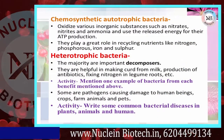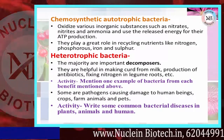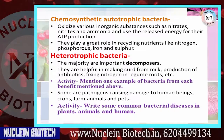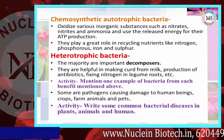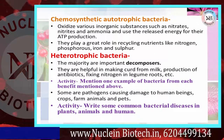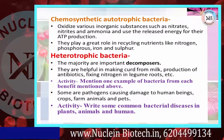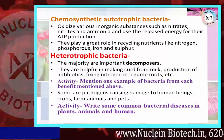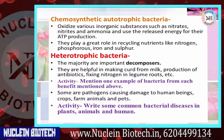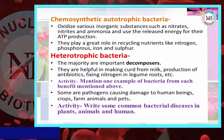Chemosynthetic autotrophic bacteria oxidize various inorganic substances such as nitrates, nitrites, and ammonia, and use the released energy for their ATP production. They play a great role in recycling nutrients like nitrogen, phosphorus, iron, and sulfur. This is their major and most important role.